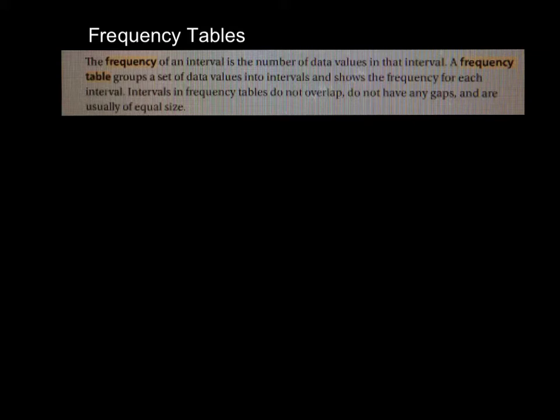The frequency of an interval is the number of data values in that interval. A frequency table groups a set of data values in intervals and shows the frequency for each interval. Intervals in frequency tables do not overlap, do not have any gaps, and are usually equal in size.